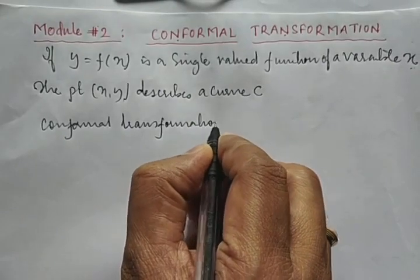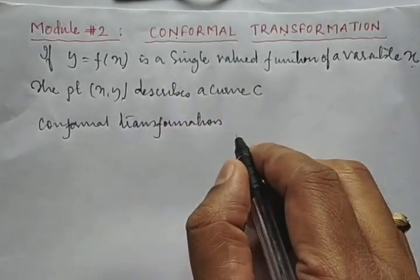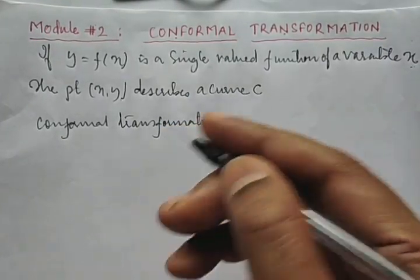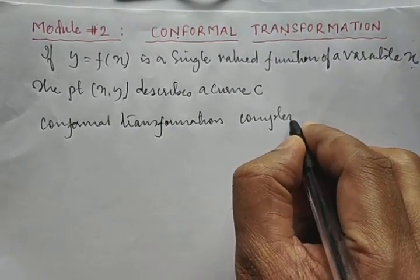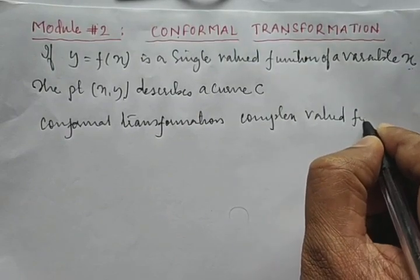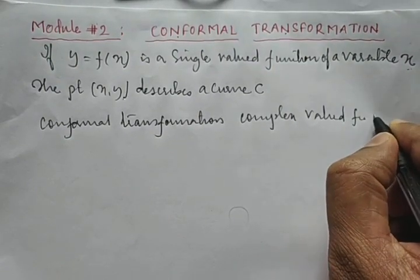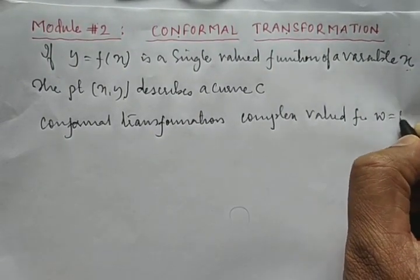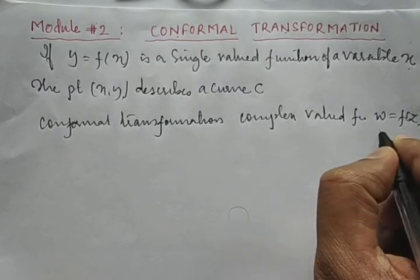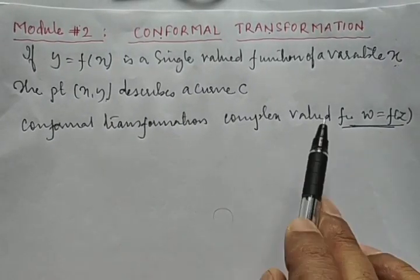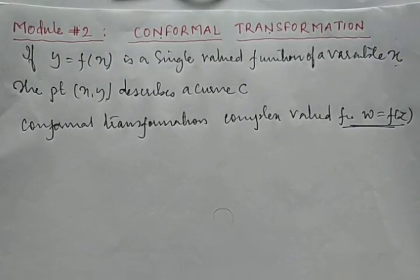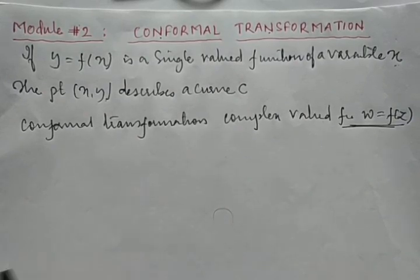Conformal transformation tells us how to represent a complex-valued function ω = f(z) geometrically. Here ω and z are two important quantities, and in what follows, ω and z will represent two different planes.